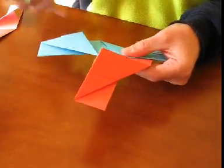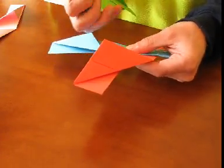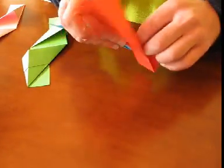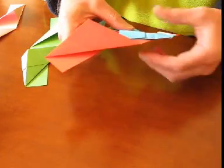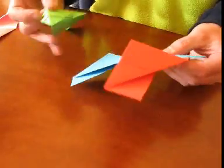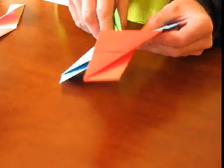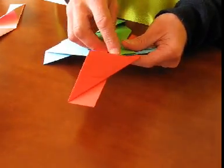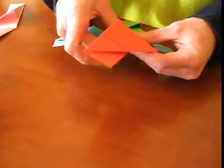Next one, put a green one in. So how I do it, I unfold the flap like that. Slide that one in and just line it up at the top.